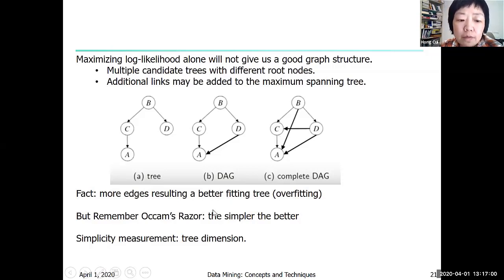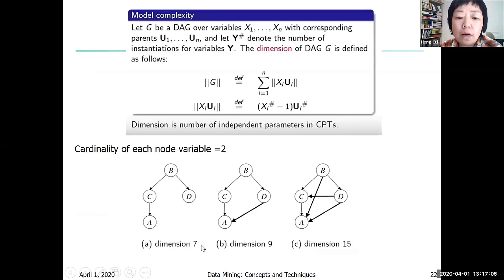So there is a tree simplicity measure called dimension. This dimension basically measures - the formula is given here, but conceptually the dimension is the number of independent parameters in those conditional probability tables. There are easy ways to compute this. This tree is more complex, it has dimension of 15. Simpler has 9, and dimension 7.